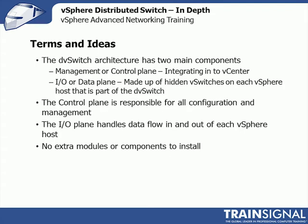Some terms and ideas: the VDS architecture has two main components. There's the management or control plane, which is responsible for all configuration and management and is integrated into vCenter. Then there's the I/O or data plane, which handles data flow in and out of each vSphere host. It's made up of hidden vSwitches on each host that's part of the distributed switch. There are no extra modules or components to install — unlike Cisco's Nexus 1000v, where you install a virtual supervisor module and a virtual Ethernet module. With the VDS, management is built into vCenter and everything you need for data connections is built into vSphere.